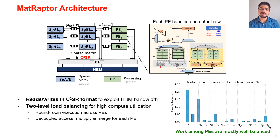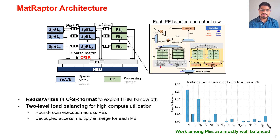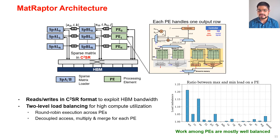Using the row-wise product approach and the C²SR sparse storage format, we implement the Matraptor architecture. It consists of sparse A and B loaders and PEs. The loaders read matrices A and B in C²SR format; the PEs perform the MAC operations and store results back to memory. Matraptor implements two levels of load balancing for high compute utilization: round-robin execution across PEs from the C²SR channel allocation, and decoupled memory and compute — performing multiply and merge phases in a decoupled manner.